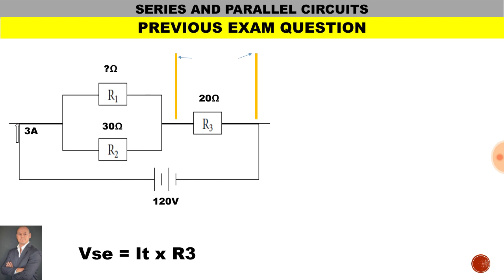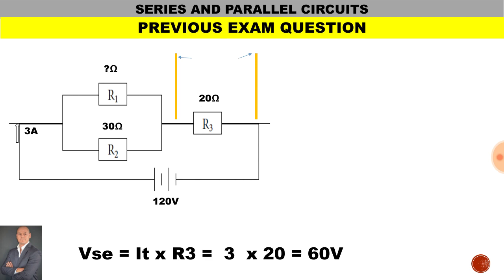The first thing we're going to do is determine the volt drop across the series resistor. To do this, we multiply the total current by the value of R3. Therefore, 3 amps multiplied by 20 ohms gives us a volt drop of 60 volts.